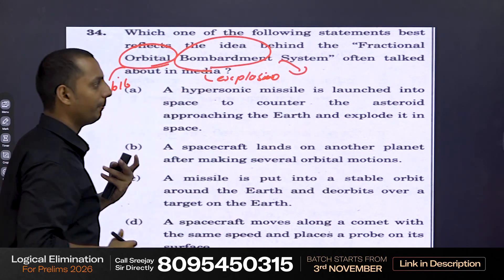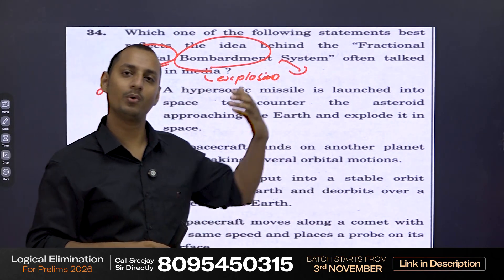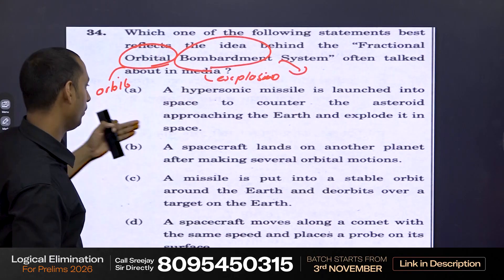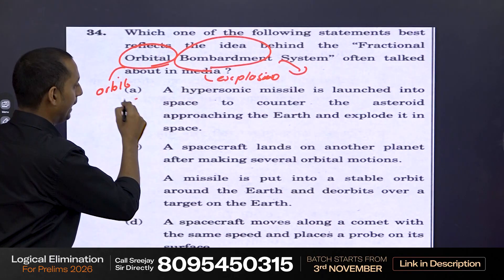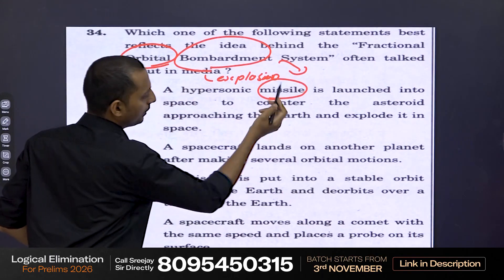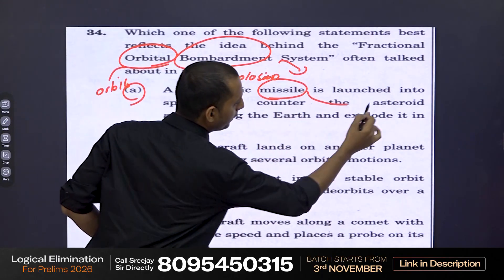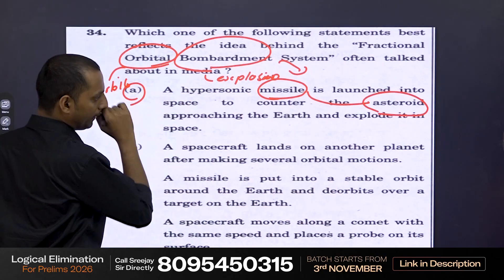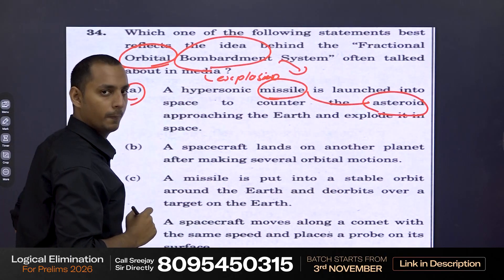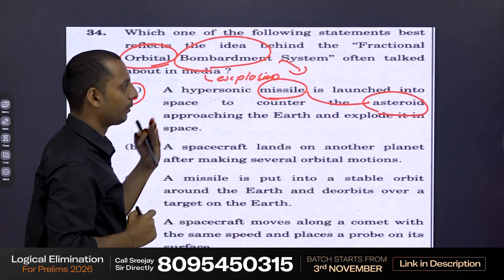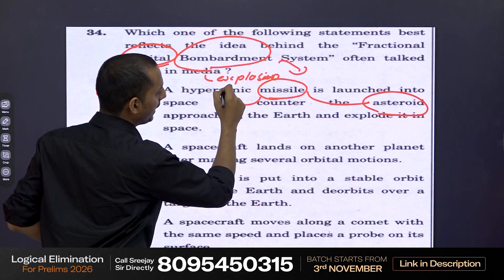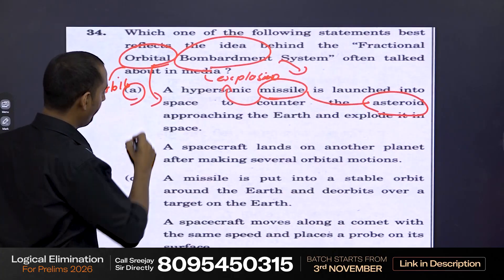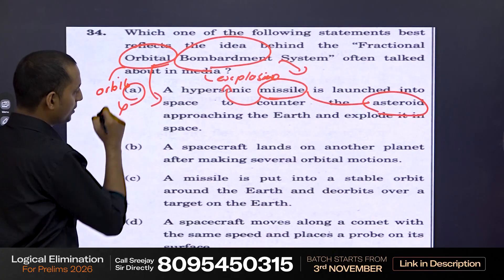After you have made a general meaning in your mind, now go for simplifying the options. Now option A talks about a missile to explode the asteroid and save the earth, but does this option have any orbit? No — it only talks about a missile or an explosion, but no orbit. Therefore, you can eliminate option A.